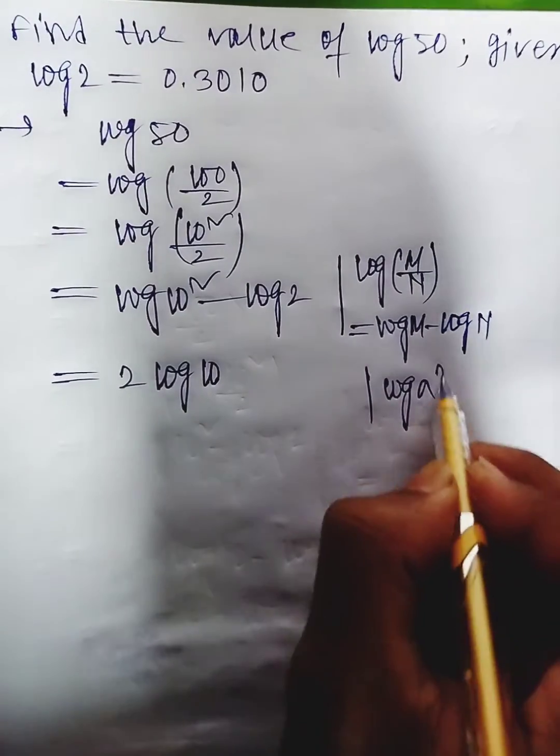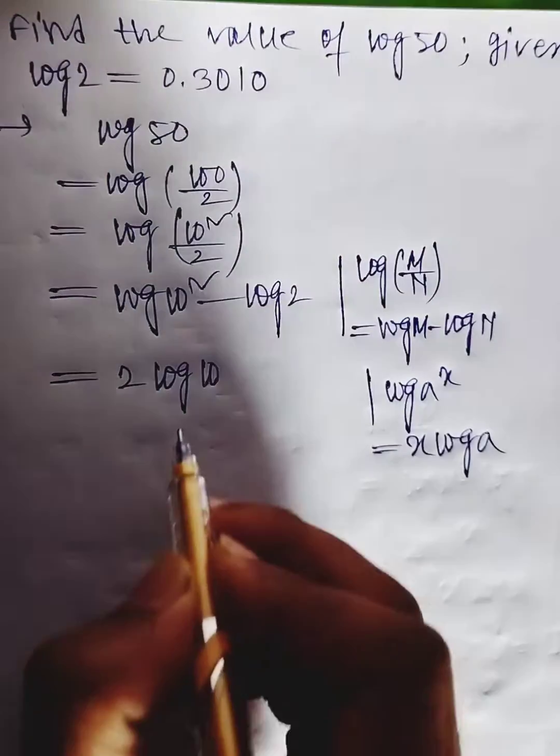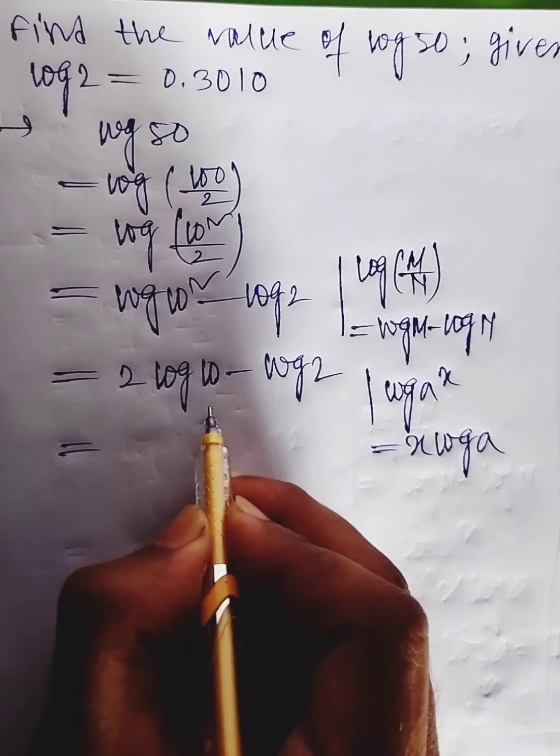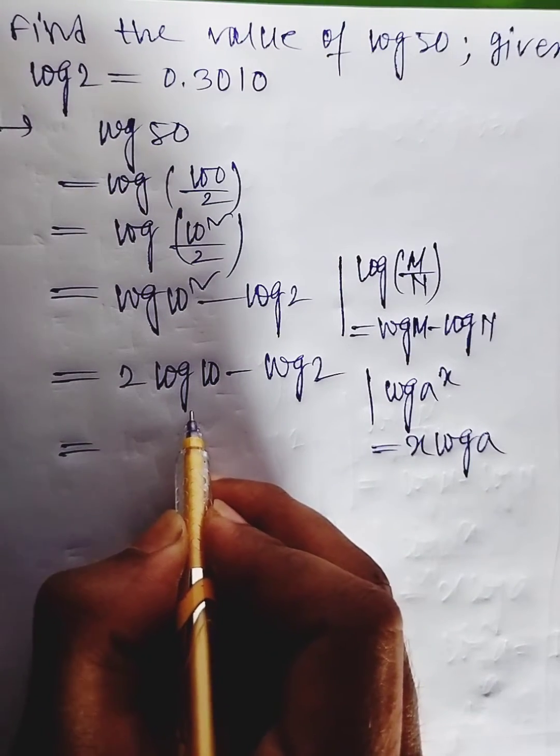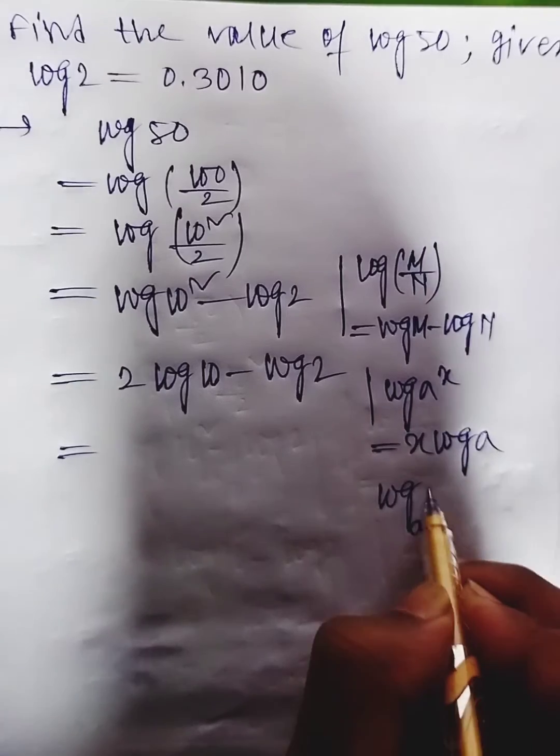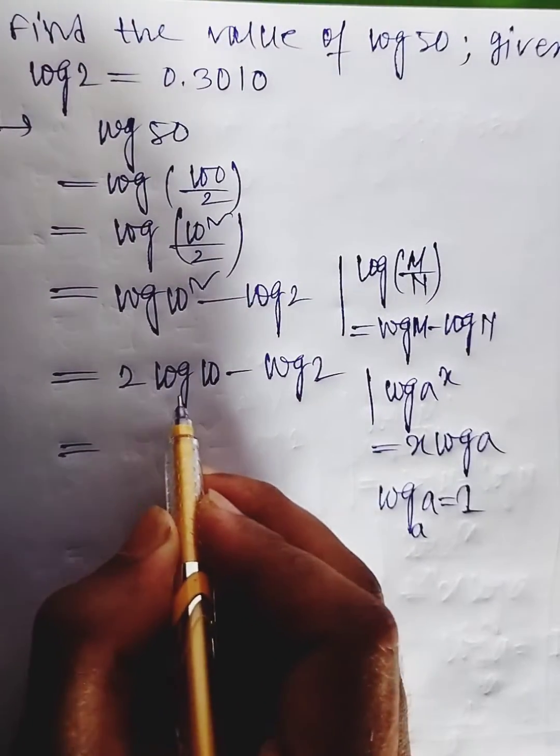Log a to the power x equals x log a minus log 2. Here log 10 equals 1 because the base of log is 10, and we know log base a of a equals 1. So log 10 equals 1.